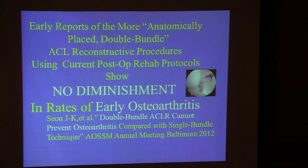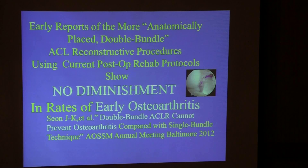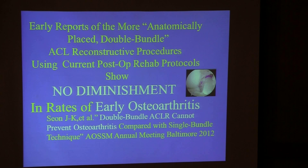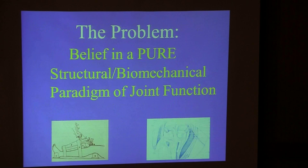The early reports of the double bundle technique developed by Freddy Fu of Pittsburgh supposedly would solve this problem, but it has not. The problem is not solved by a structural approach — this shows no diminishment in rates of early arthritis with this technique.